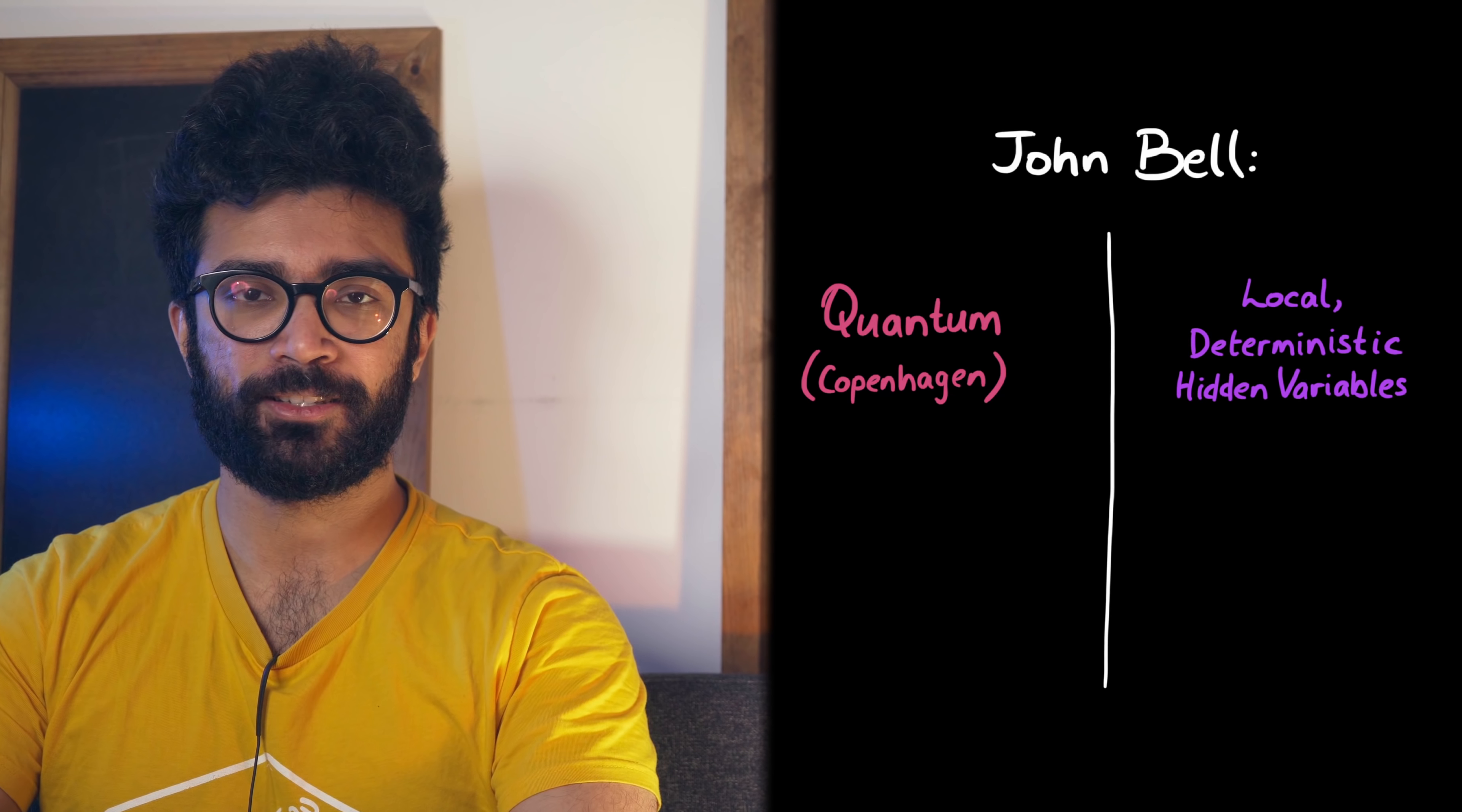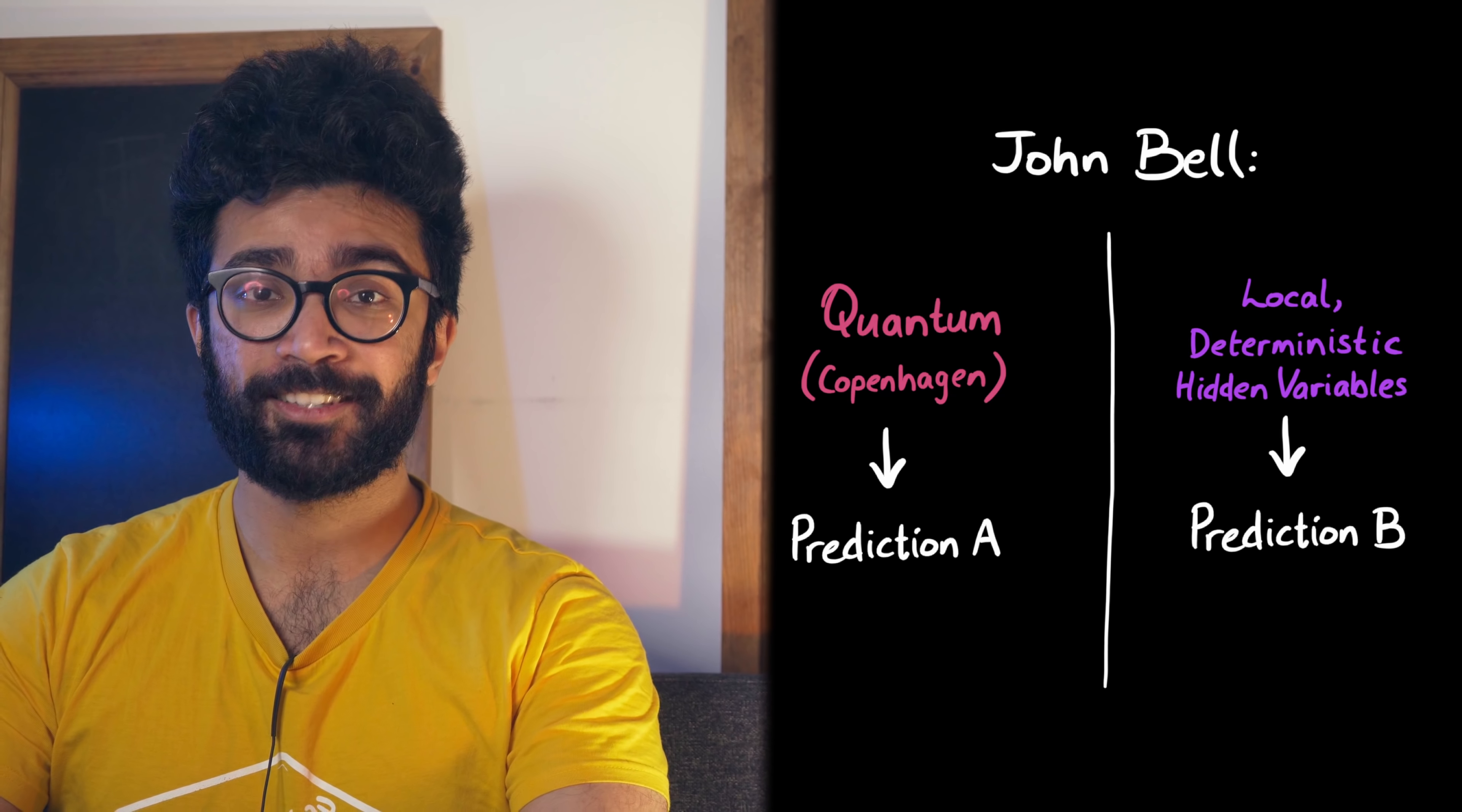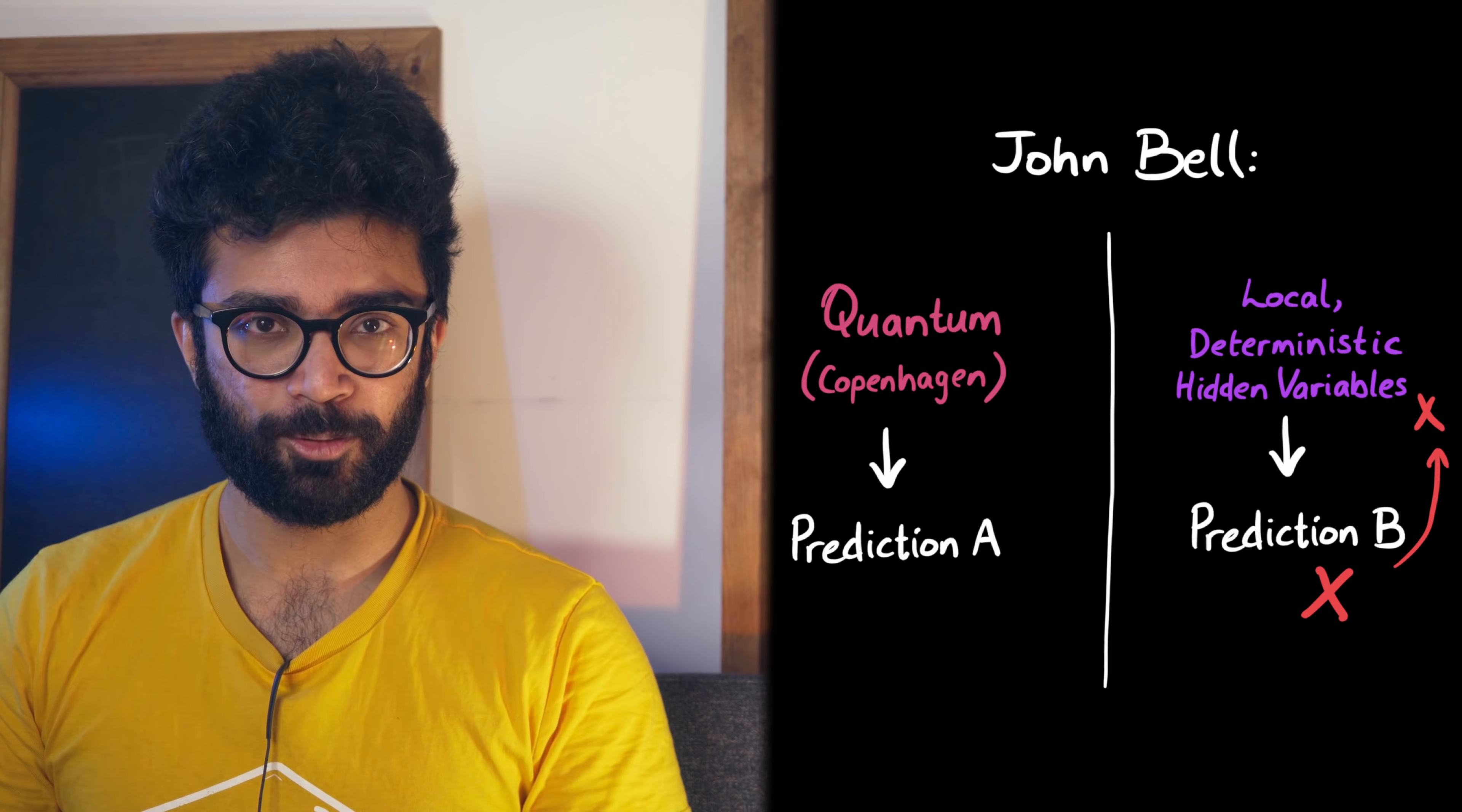A few years later, a physicist called John Bell came along and developed the mathematics for this deterministic and local hidden variable theory, to the point where we could conduct experiments and figure out whether the quantum mechanical version was right, or Einstein's version was right. And all of the experiments that have been done since then have showed that Einstein was wrong, or at least partly wrong. The experiments have ruled out any hidden variable theory that is both deterministic and local. But it hasn't yet necessarily ruled out a hidden variable theory that is deterministic, but not local.